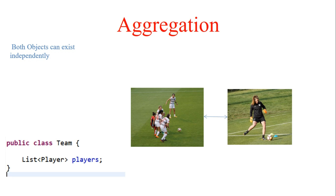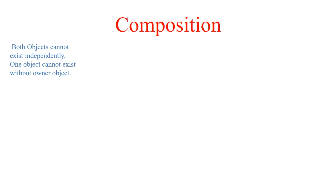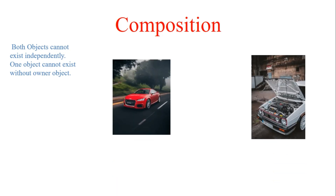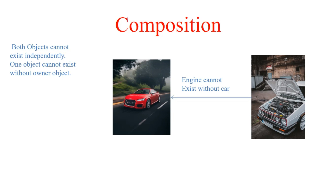Now let's move to composition. Composition is an association between two objects where one object is part of another. For example, a car has an engine, but the engine is part of the car. This is a unidirectional composition relationship. An engine cannot exist without a car — they are tightly coupled. The life of the engine depends on the car: if the car is deconstructed, the engine also ceases to exist.